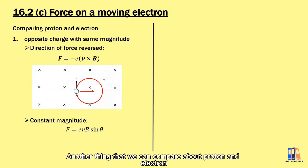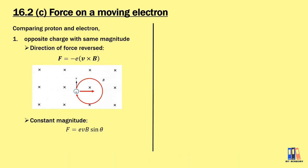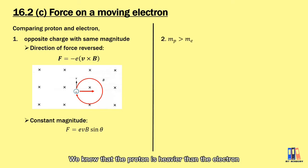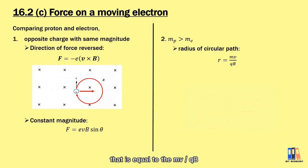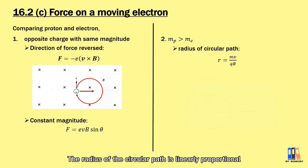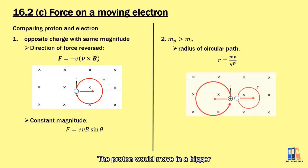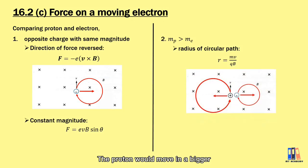We can also compare the proton and electron by their mass. The proton is heavier than the electron. Since the radius of the circular path equals mv / (QB), the radius is linearly proportional to the mass. Therefore, the proton moves in a larger circular path than the electron.